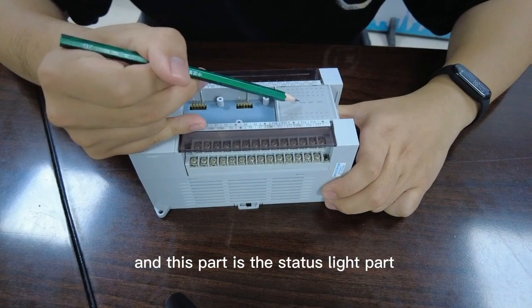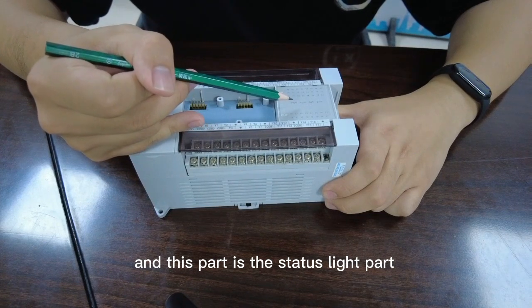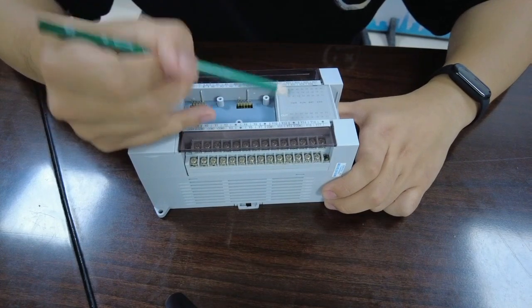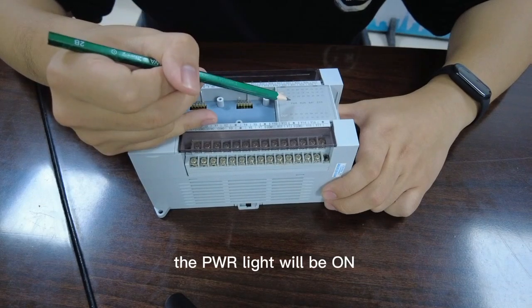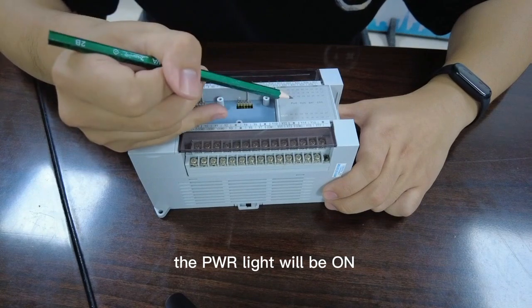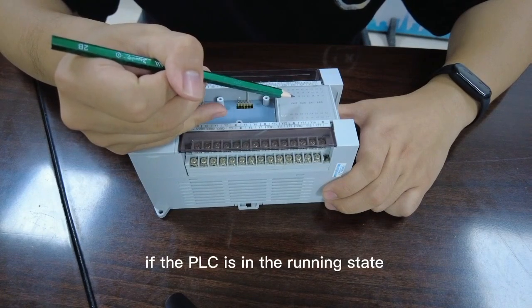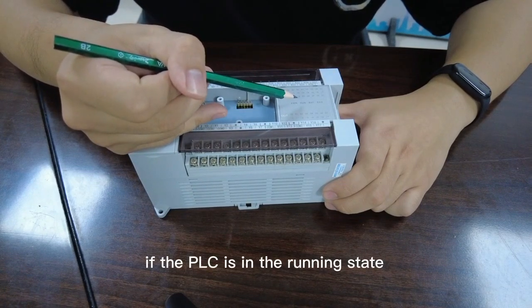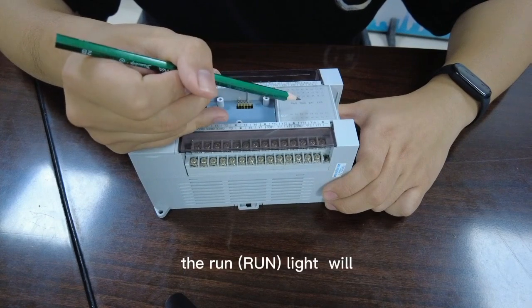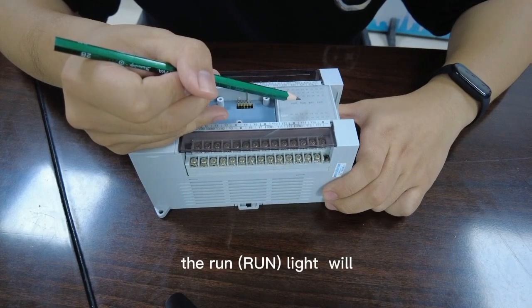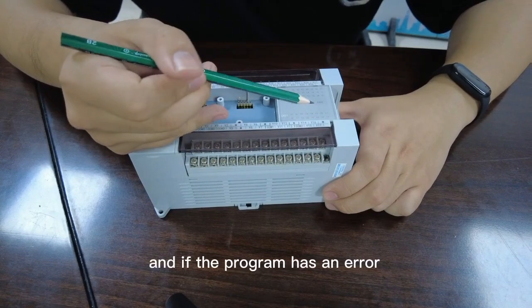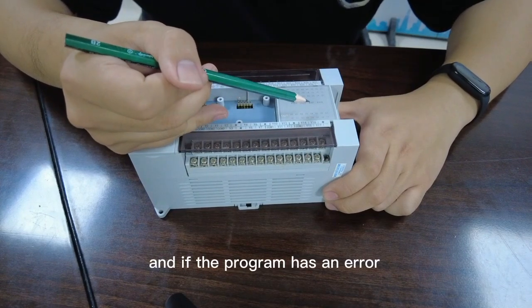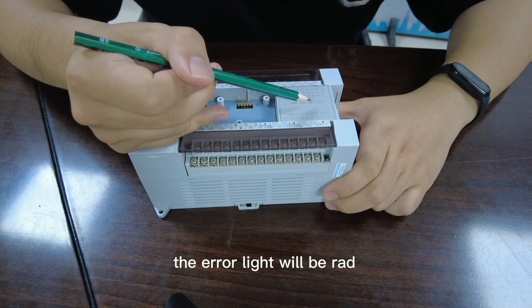And this part is the status light part. When the power is normal, the PWR light will be on. If the PLC is in the running state, the RUN light will also be on. And if the program has an error, the error light will be red.